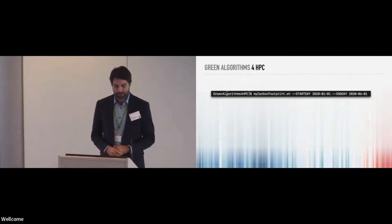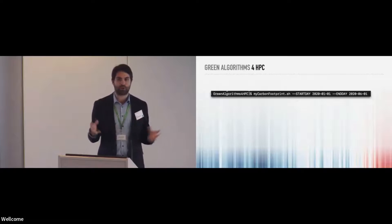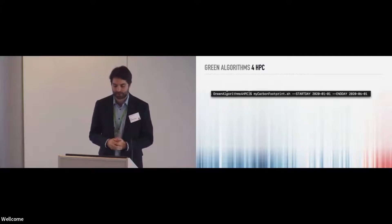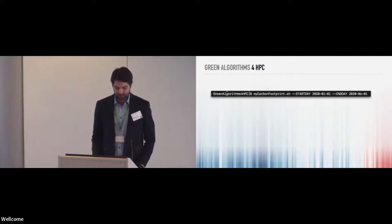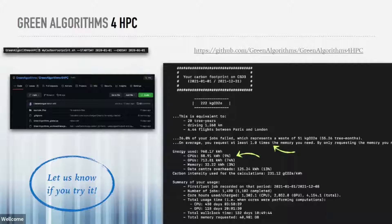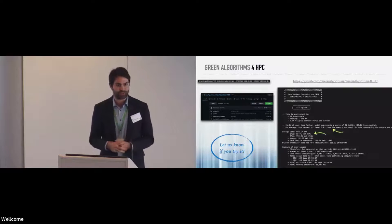The problem with tools like that is they don't work if you run a lot of different tasks — they don't work at institutional level, being more suited for a small project or a grant application. So we thought it would be great to include that in HPC facilities. We called it Green Algorithms for HPC. Most HPC work gets logged on the data center because they need to charge users or at least know who is using what. Using all those logs, you can then calculate carbon footprints. This server-side tool, also on GitHub, gives you a lot more precise metrics, including the impact of failed jobs.